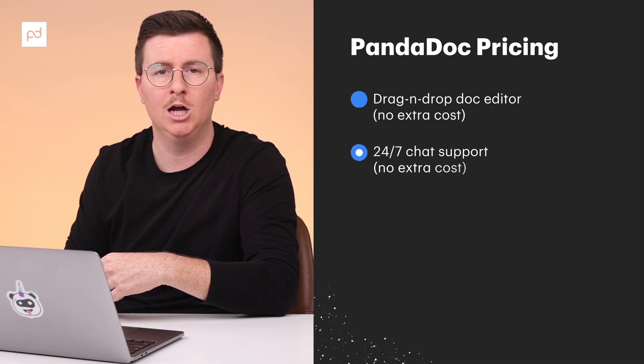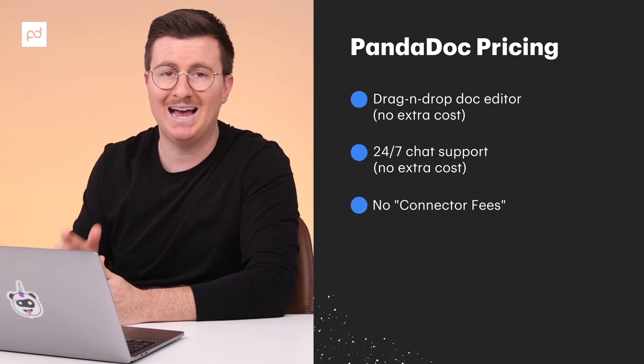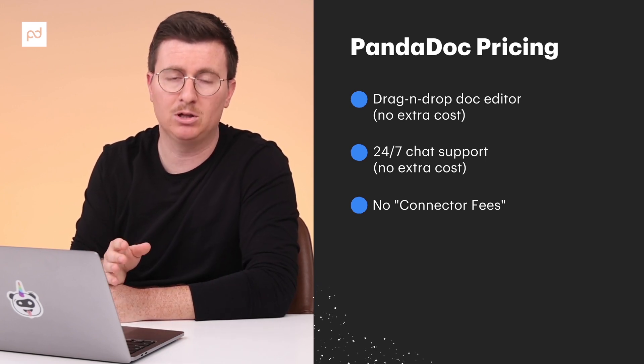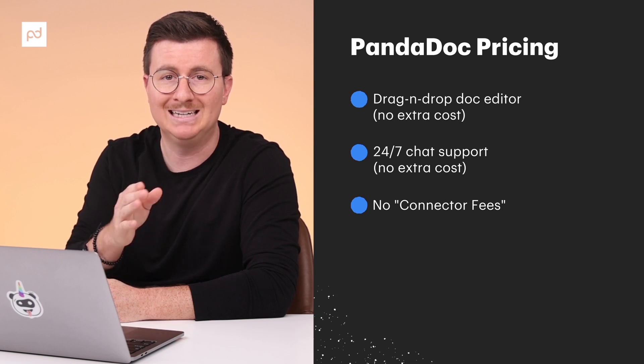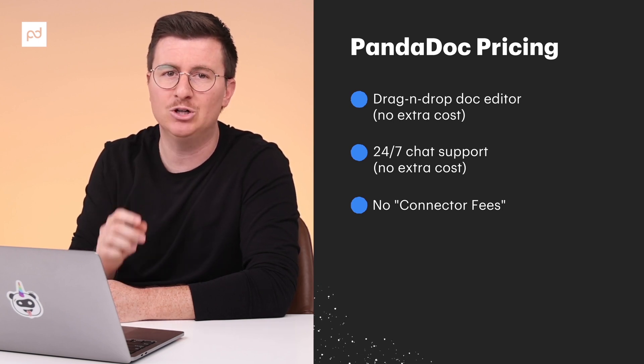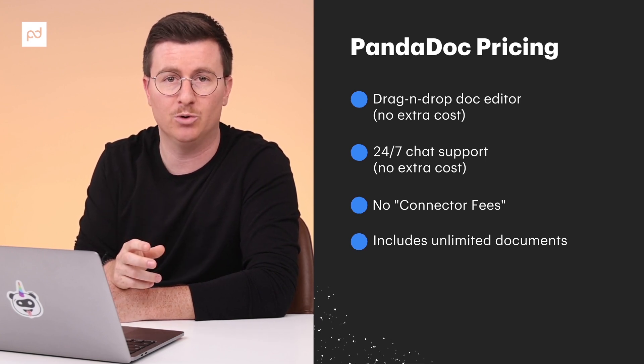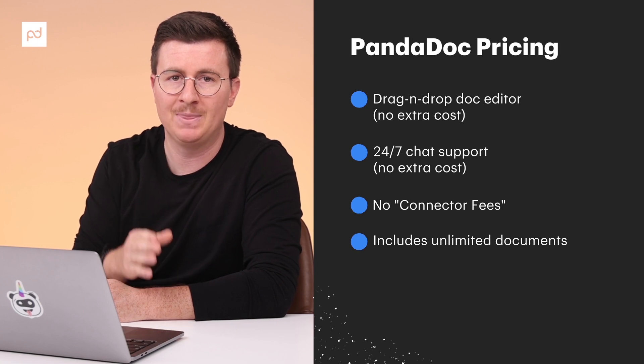If you have a smaller team or you're planning to grow your business, these might be important factors to consider. Another major difference is pricing transparency. PandaDoc is more of an all-in-one digital document tool with a native drag-and-drop document builder, 24/7 chat support, and mostly free integrations. While DocuSign does have these functionalities, they are often separate products or costly add-ons. Premier support plans typically cost around 15% of your total contract, integration connectors are $18 per user per month, and their document editor is an additional $50 per month per user.